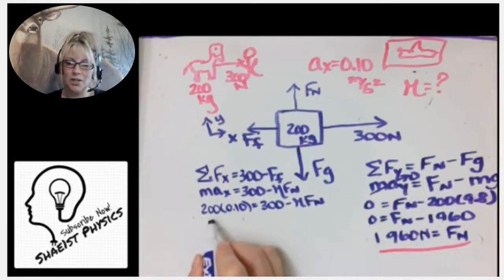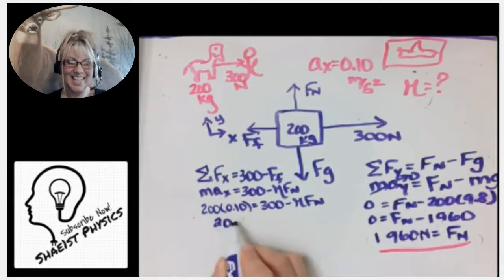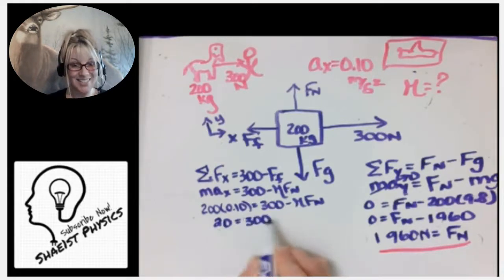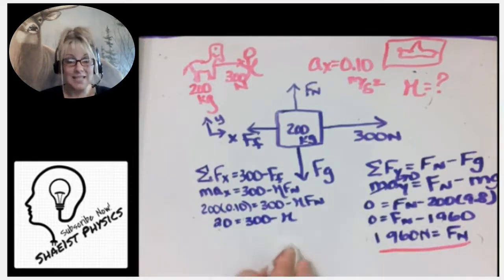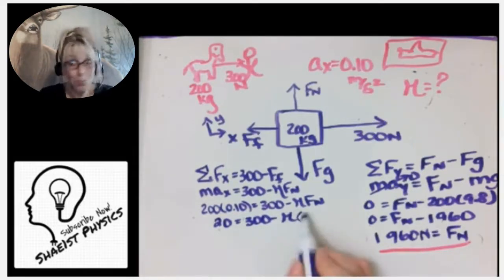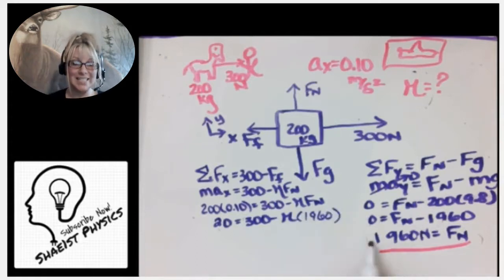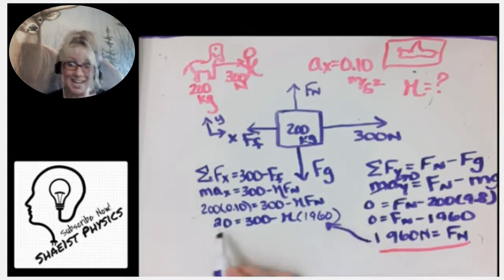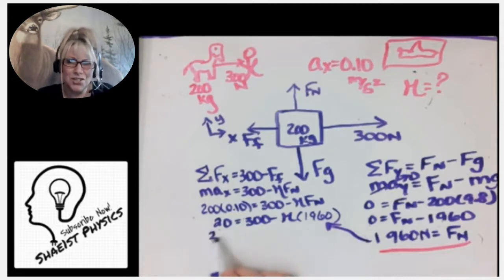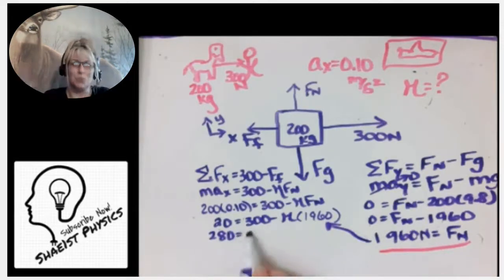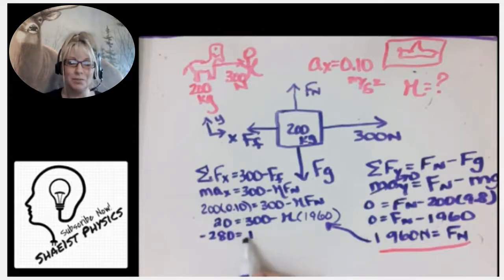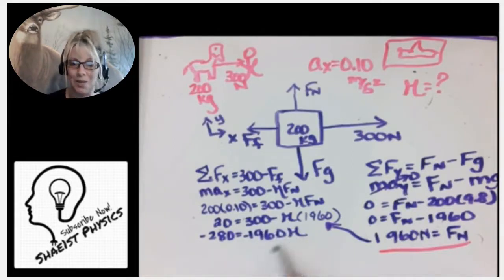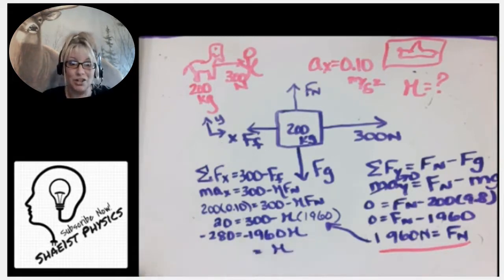200 times 0.1 is just going to be 20 equals 300 minus coefficient of friction—we still don't know what that is—times the normal force, which now we know what it is, 1960. Yeah, now it's party time! Celebrate each little step you do. Celebrate, don't get overwhelmed. As long as you're taking baby steps, you're going to be okay. You got to keep those baby steps going though.